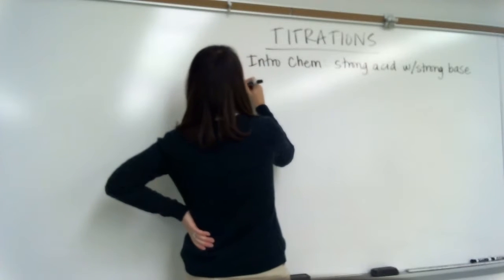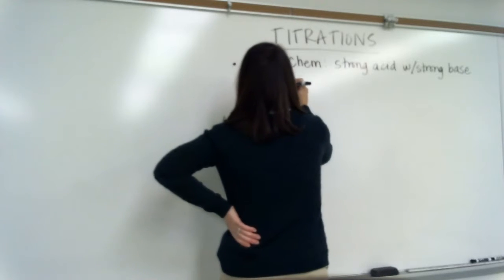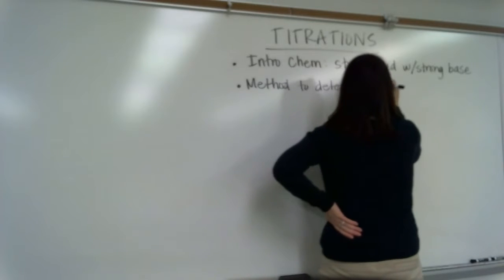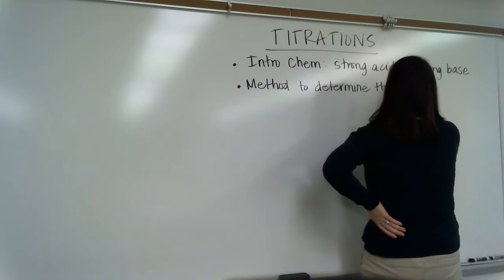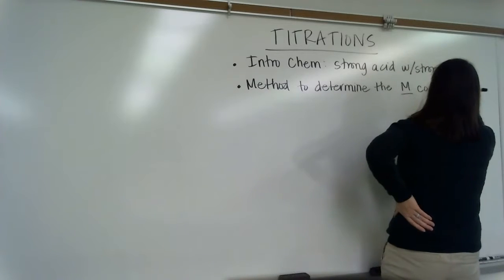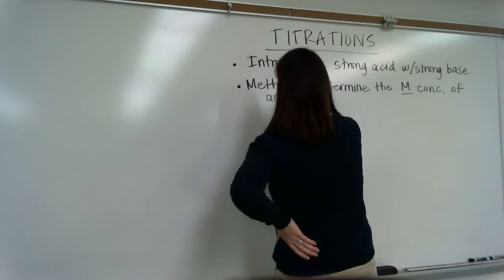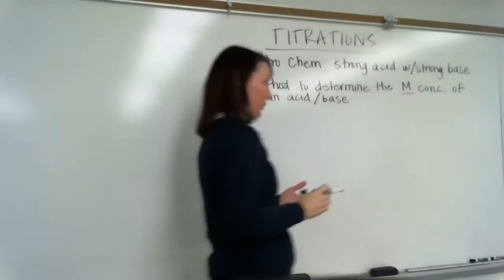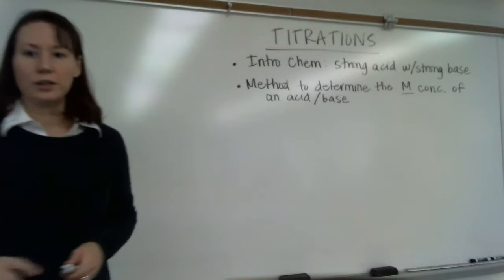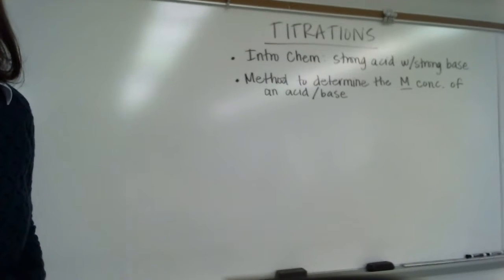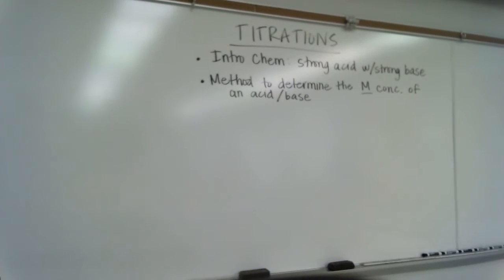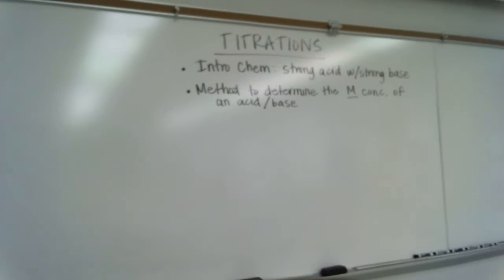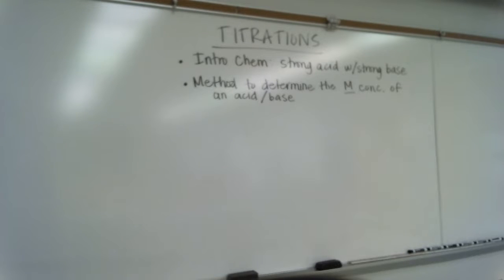So titration - this is a method to determine the concentration, the molar concentration, of an acid or a base. That's the purpose. We're using a titration to figure out what's the concentration of an unknown acid, or you can do it for an unknown base. You can go either direction.